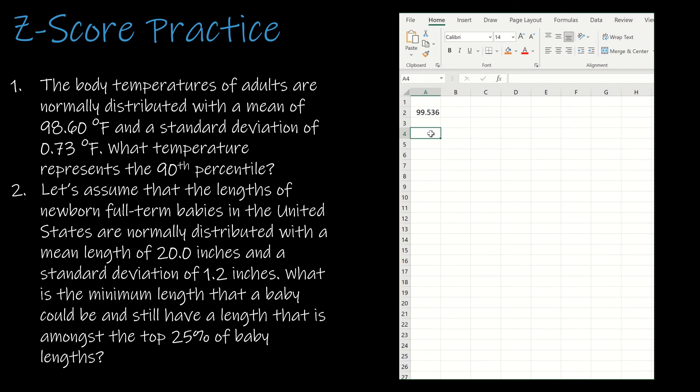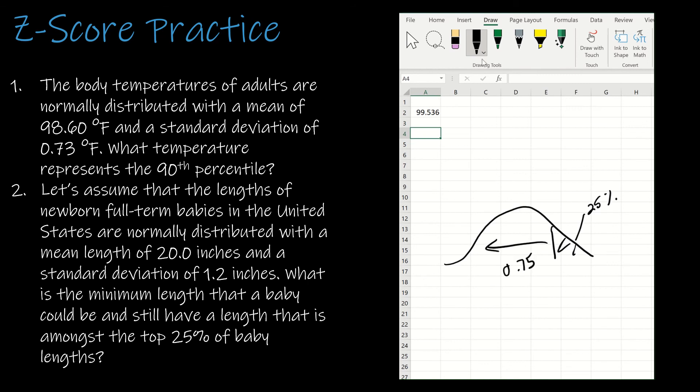For two, let's assume the lengths of newborn full-term babies in the U.S. are normally distributed, with a mean length of 20 inches and a standard deviation of 1.2 inches. What's the minimum length that a baby could be and still have a length that is amongst the top 25% of baby lengths? What we're looking at is that the entire curve is 100%. And if the entire curve is 100%, and we're looking at the top 25%, that means to the left is 75%. I'm going to use NORM.INV of 0.75, because we need to tell Excel how much is to the left. And then the mean is 20, the standard deviation is 1.2, and so a baby that is 20.809 inches would be amongst the top 25%, so that height or greater.